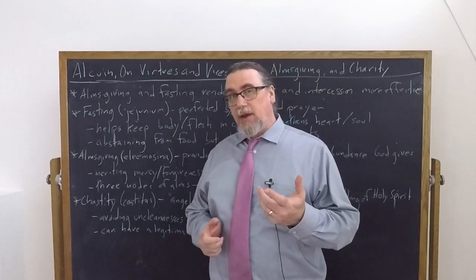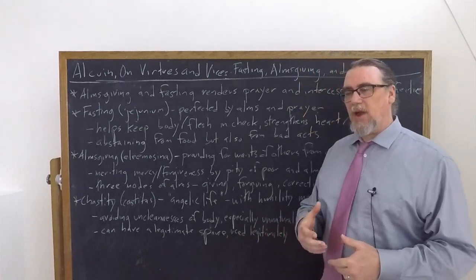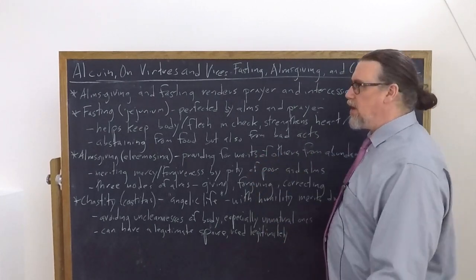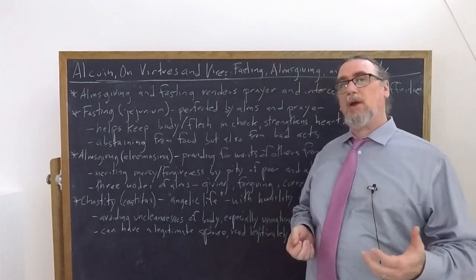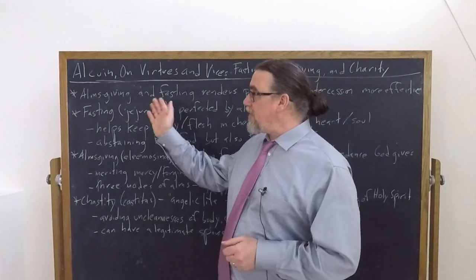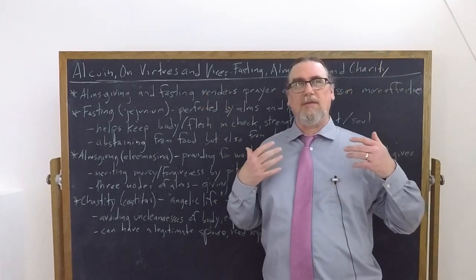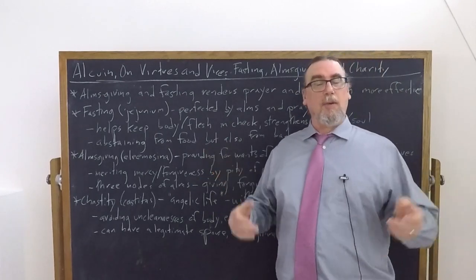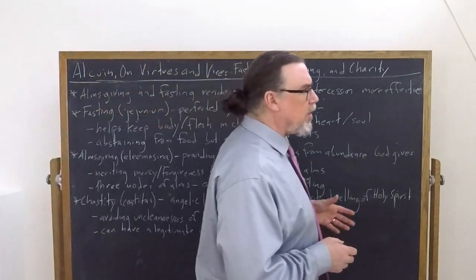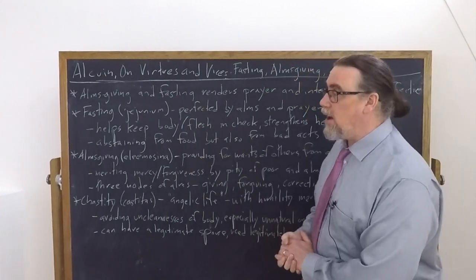In chapters 16, 17, and 18 of his treatise on virtues and vices, Alcuin of York is going to discuss three important actions or courses of action that are expressive of virtue and that play a role in combating against three of the capital vices. And so these are fasting, almsgiving and chastity. So fasting is opposing the vice of gluttony and chastity, clearly opposing the vice of lust or fornication. What is almsgiving opposing? It's not a corporeal vice, rather it's a spiritual one. It opposes greed.